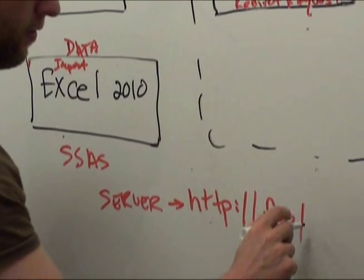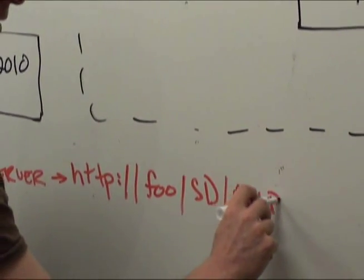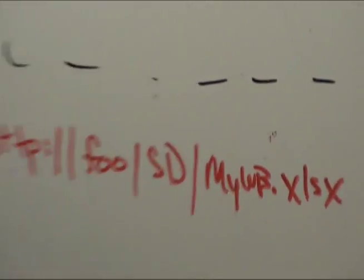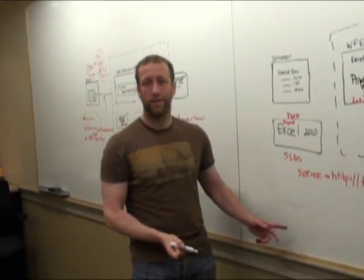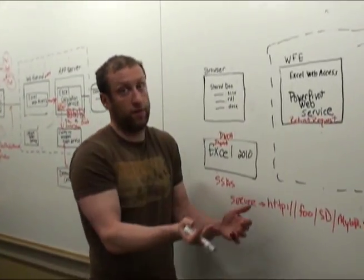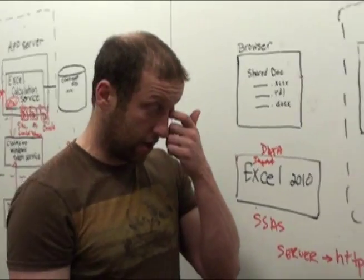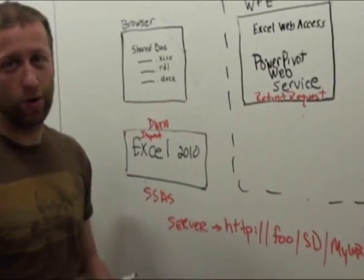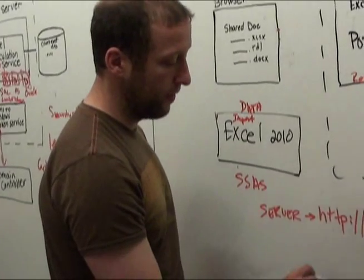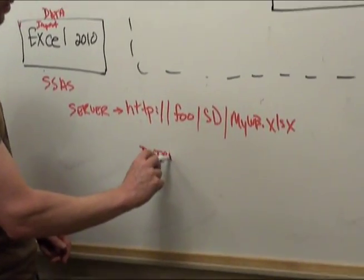You go to something like \\foo\shared documents\myworkbook.xlsx. Looks kind of odd — I've now given a URL. I didn't give a server, I didn't give anything. I just said this is the actual workbook. And when you do that, if you go down, it will actually show a databases dropdown.